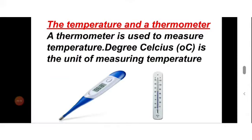Now let's learn about temperature and thermometers. When a substance gets heat, it becomes warm. We put our hand or finger in water to judge how hot it is, but that is not an accurate measure. Besides, if the substance is very hot, we could get burned.